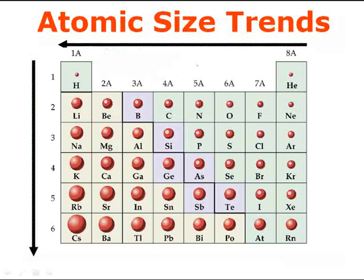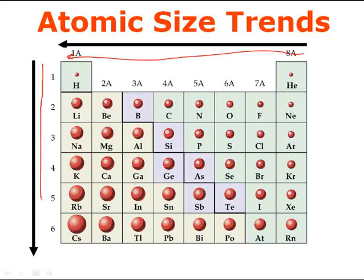So my atomic size trends on the periodic table in summary: my atoms get larger going to the left across my periods, and larger going down a group from top to bottom.